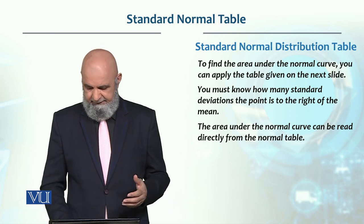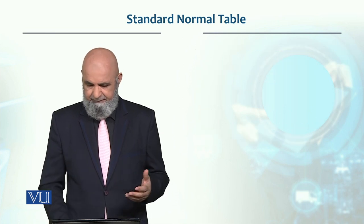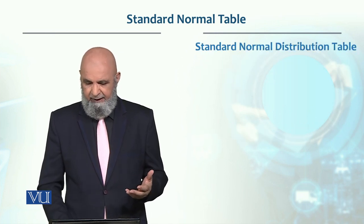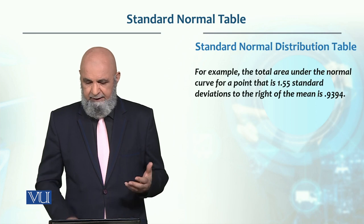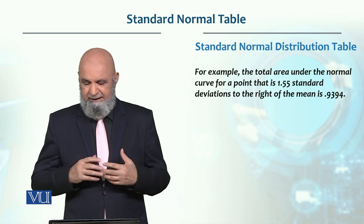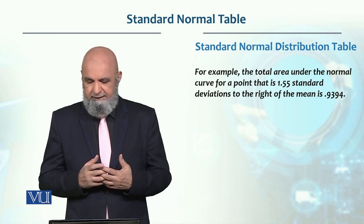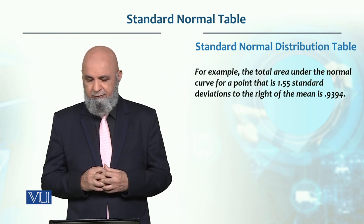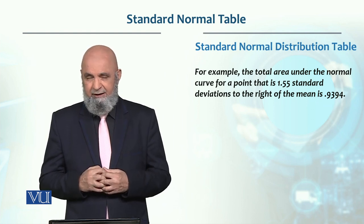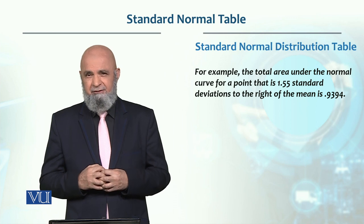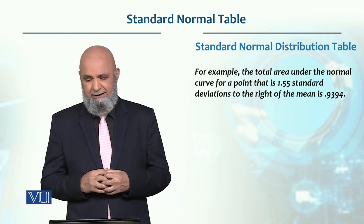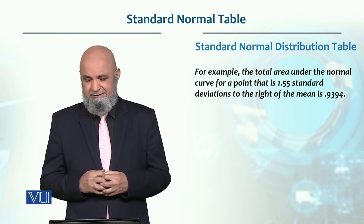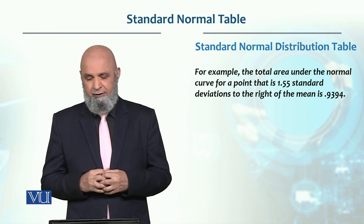The normal curve can be read directly from the table. For example, the total area under the normal curve for a point that is 1.55 standard deviations away from the mean is 93.94%.